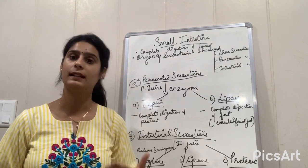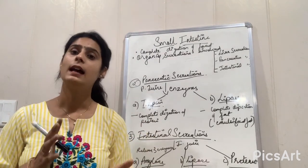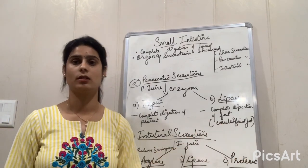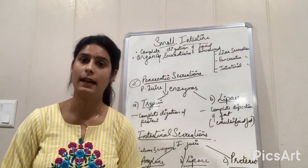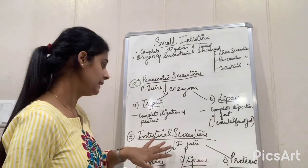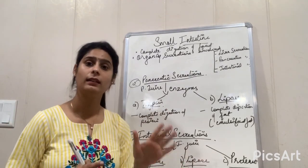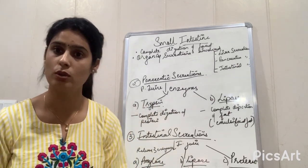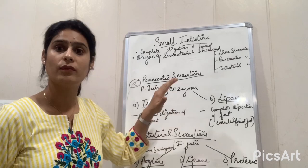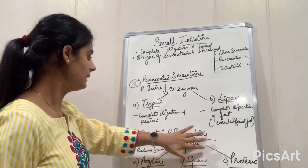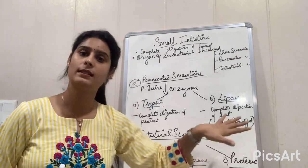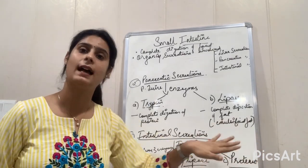Now talking about the third secretion of the small intestine, which is secreted by the intestine itself — these are its own secretions, so they are called intestinal secretions. This intestinal secretion produces intestinal juice, which, similar to pancreatic juice, contains enzymes — specifically three enzymes.